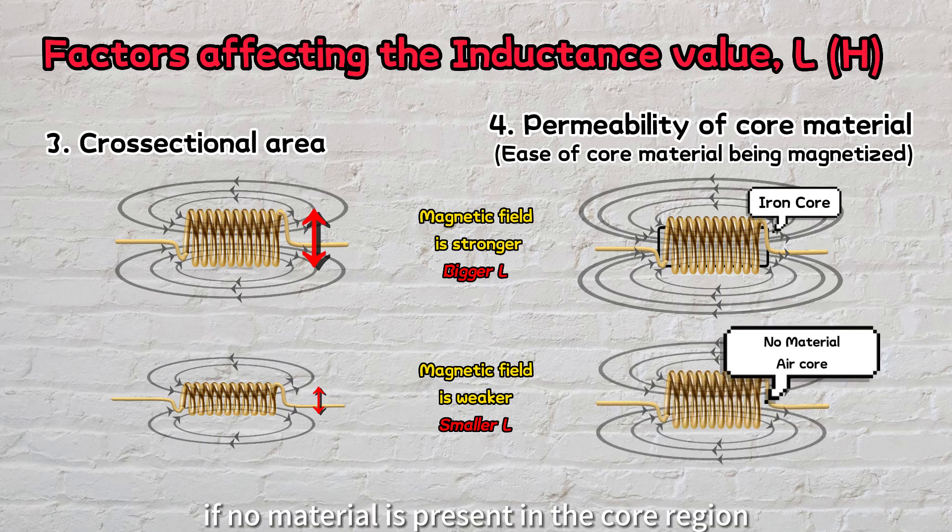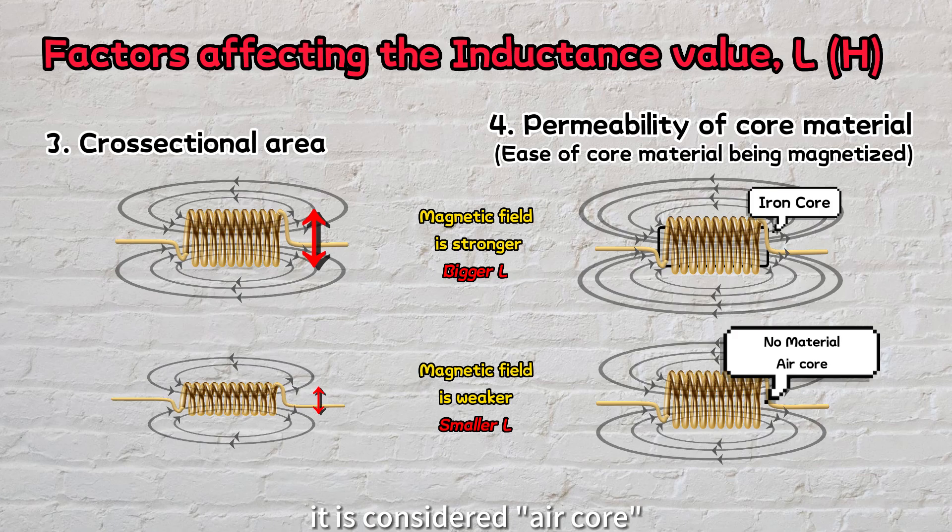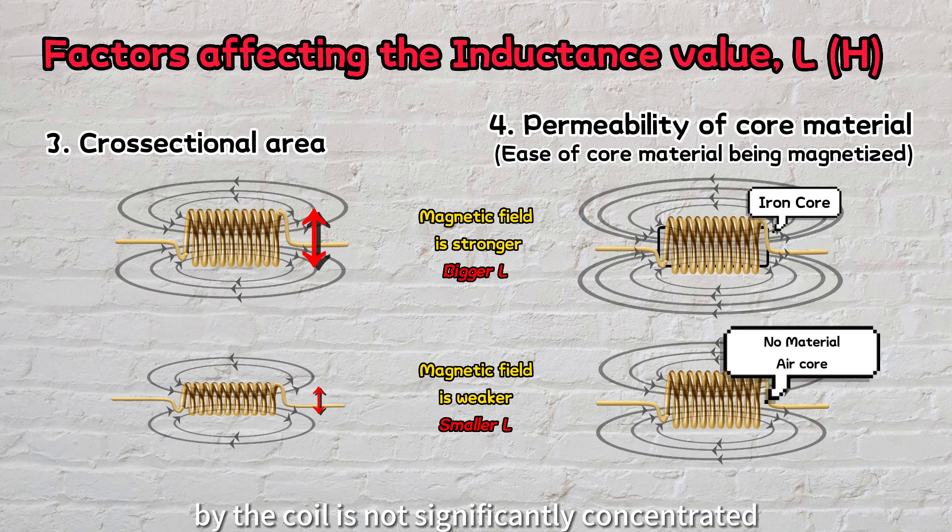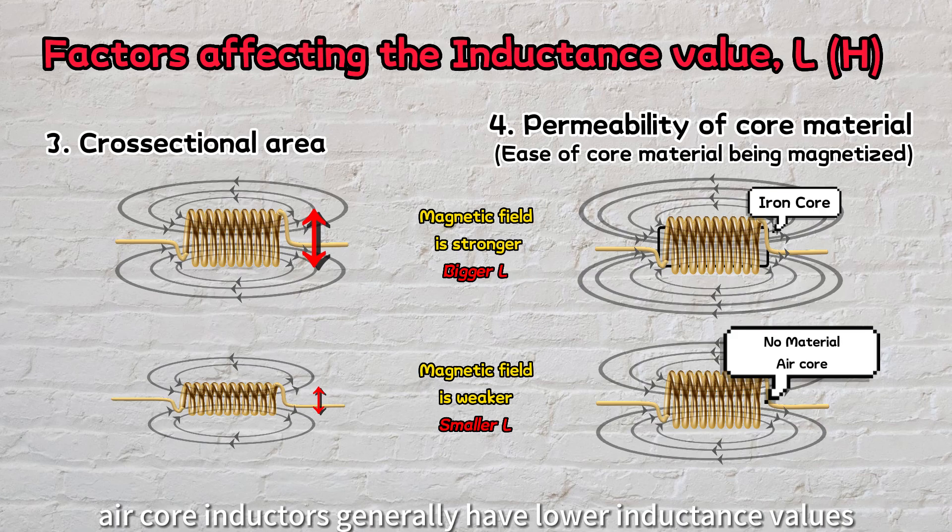On the other hand, if no material is present in the core region, it is considered air core. The absence of a core material means that the magnetic field generated by the coil is not significantly concentrated or enhanced. As a result, air core inductors generally have lower inductance values compared to those with a core material.